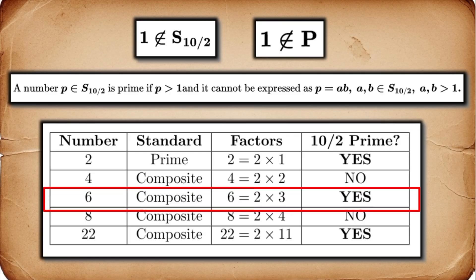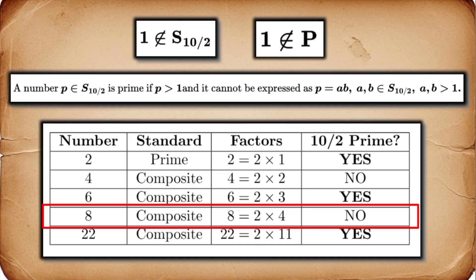Now, 6. Normally, composite. 6 equals 2 times 3, or 3 times 2. But is 3 in S10 over 2? No. It's an odd digit, so it's forbidden. There is no other way to multiply two numbers from S10 over 2 to get 6. Therefore, in the 10 over 2 system, 6 is prime. Let that sink in. In our new world, 6 is a prime number.